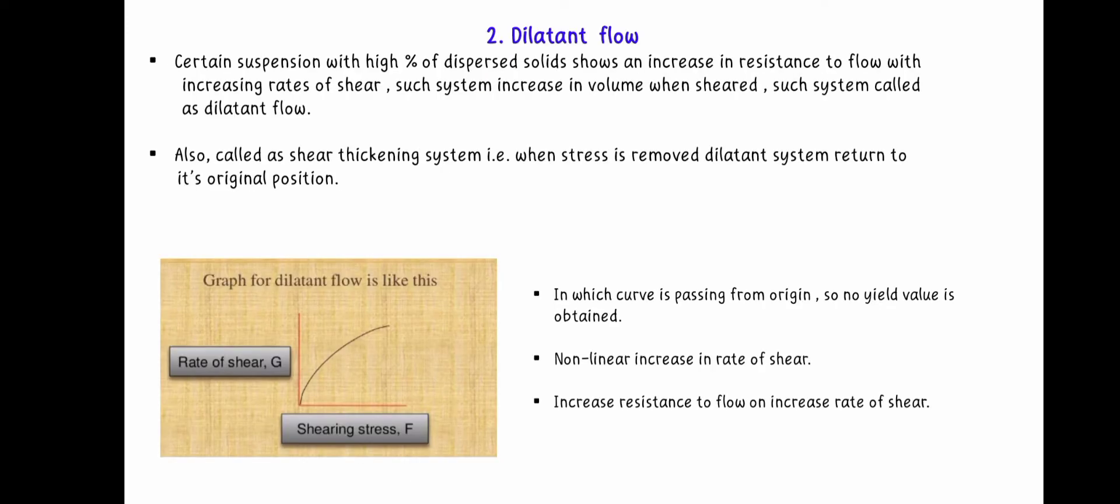The second type of non-Newtonian system is dilatant flow. Certain suspension with high percentage of dispersed solids shown as increase in resistance to flow with increasing rate of shear. Such system increase in volume when sheared. Such system called as dilatant flow. Also called as shear thickening system, that is when stress is removed, dilatant system return to its original position.